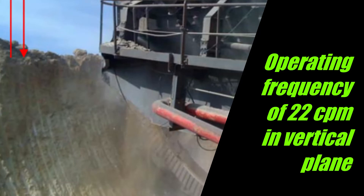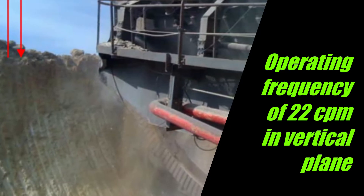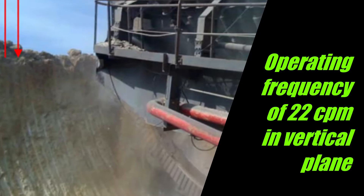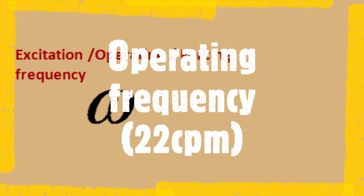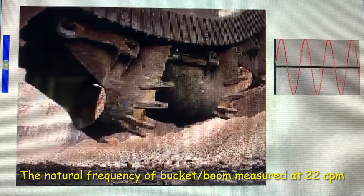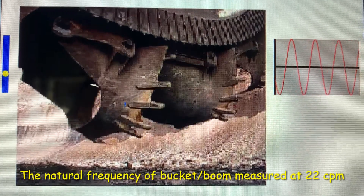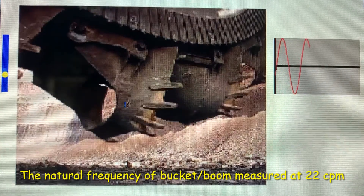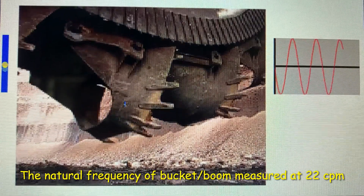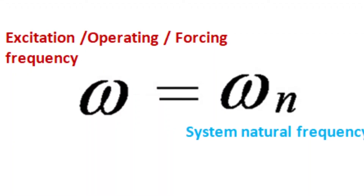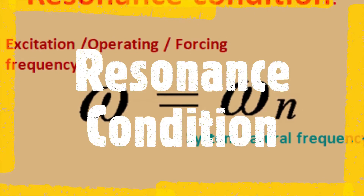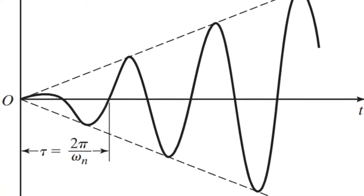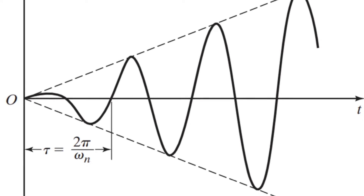Under the specific operating condition, the operating frequency of vibration was determined to be approximately 22 cycles per minute in the vertical direction. From a bump test, the bucket or boom natural frequency was also observed at approximately 22 cycles per minute. So it would appear that the excessive vibration is the result of a resonance condition, where the natural frequency of the bucket system is being excited by the specific operating condition.